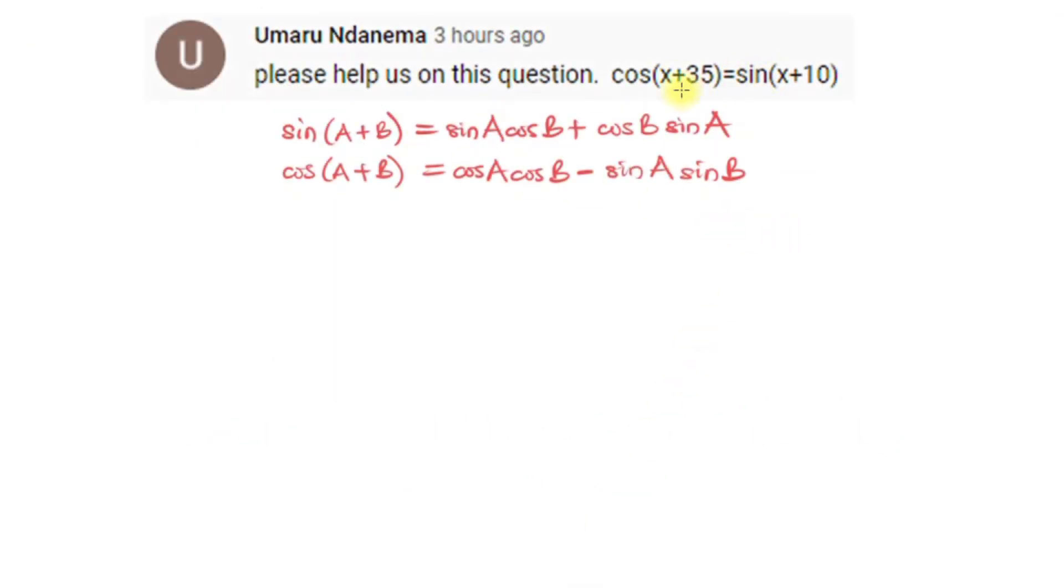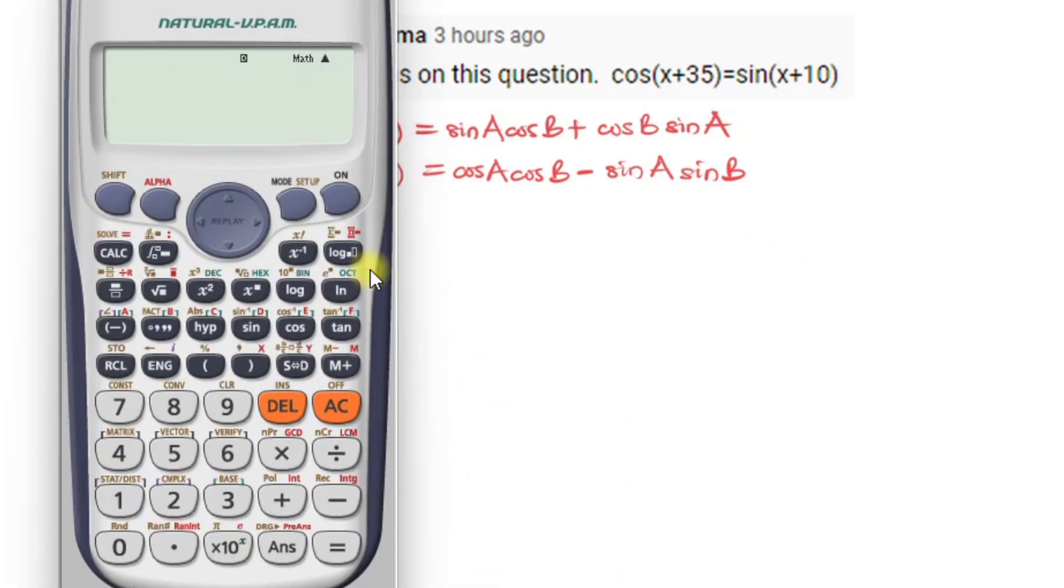So I want to first and foremost look at this question, but I want to look at the scientific calculator as a means of shortcut to solve this question. So first I want to clear my calculator. You can check our videos on how to make use of the scientific calculator and then you'll be good and fine and be able to follow along effectively as you solve this. Now we have cos(x+35) is equal to sin(x+10).